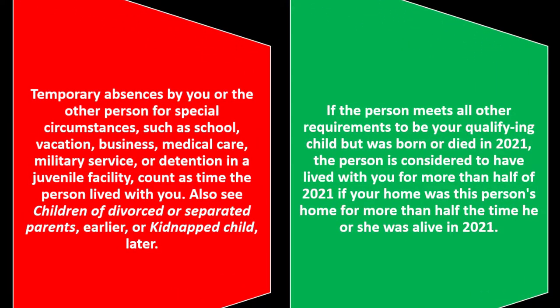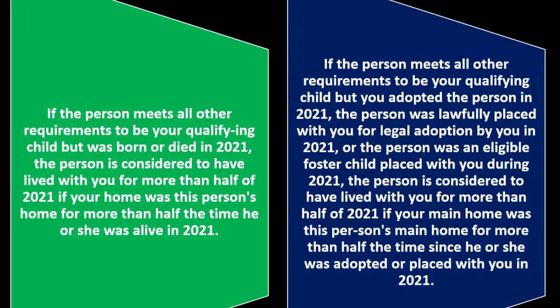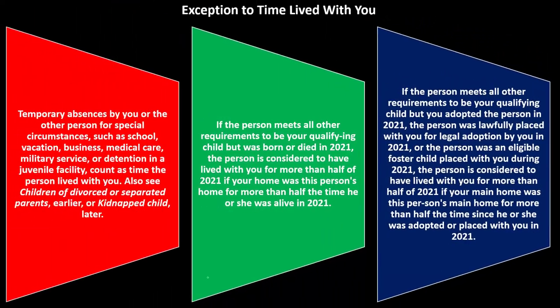If the person meets all the other requirements to be your qualifying child but was born or died in 2021, the person is considered to have lived with you for more than half of 2021 if your home was this person's home for more than half the time he or she was alive in 2021. Similarly, if you adopted the person in 2021, the person was lawfully placed with you for legal adoption in 2021, or the person was an eligible foster child placed with you during 2021, the person is considered to have lived with you for more than half of 2021 if your main home was this person's main home for more than half the time since he or she was adopted or placed with you in 2021.